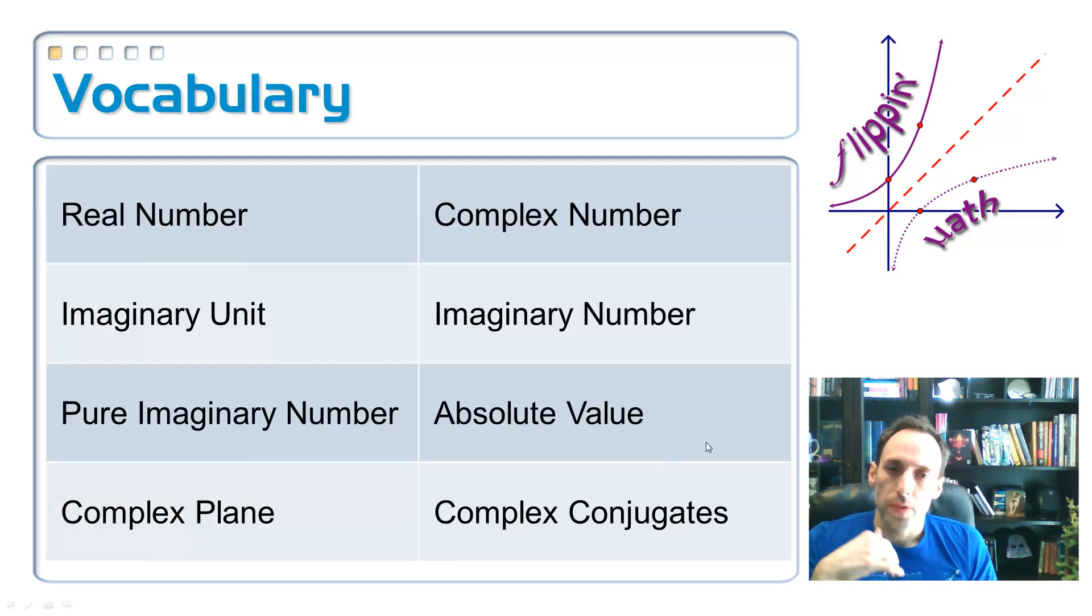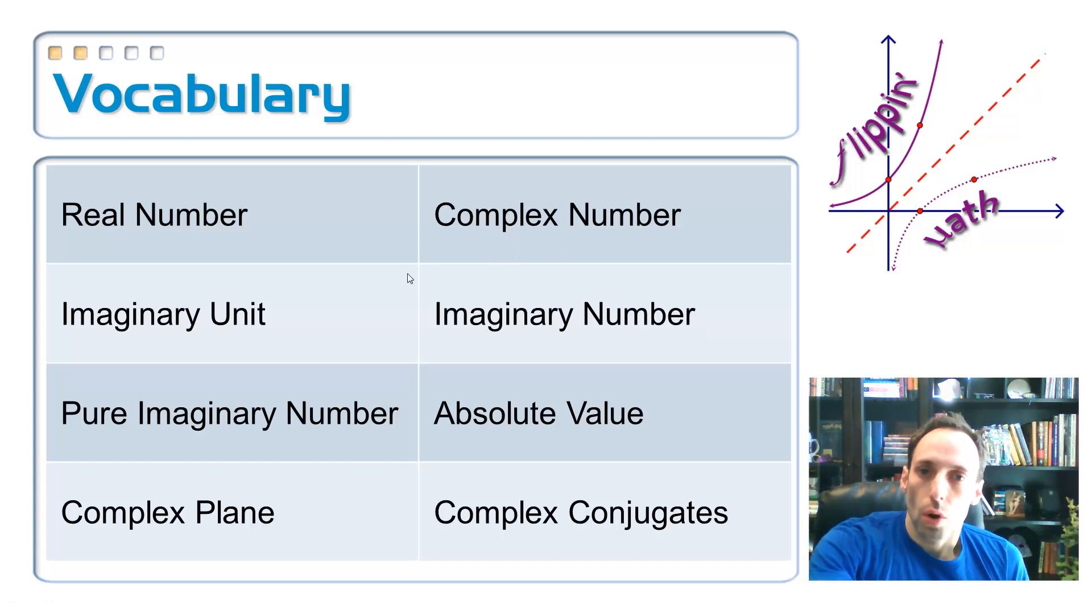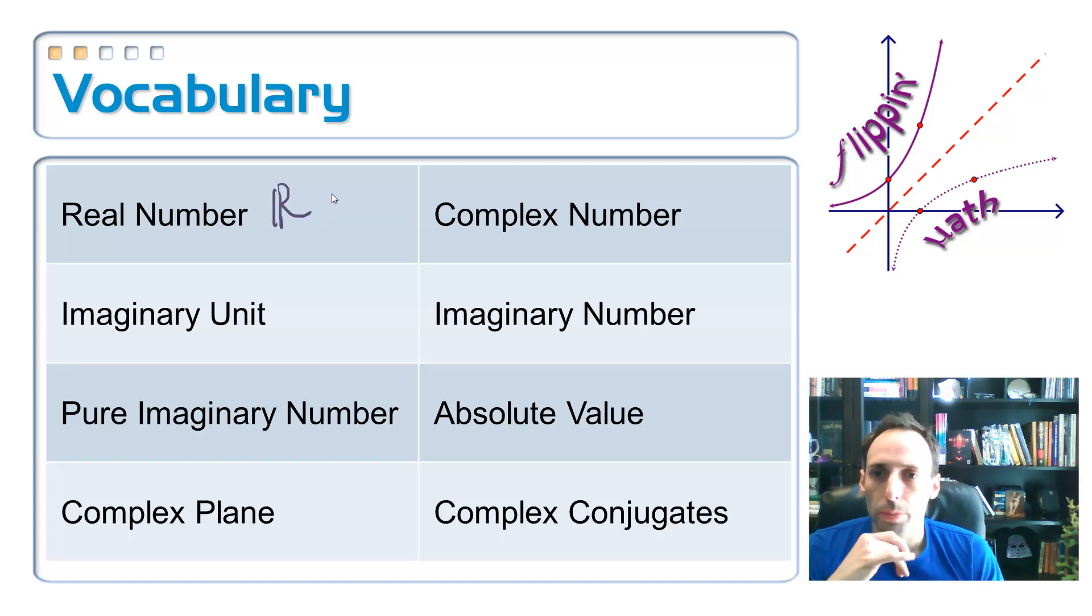So let's discuss the vocabulary for this section. So first of all, we're talking about numbers. So why not start out with the real numbers? So real numbers are all the numbers that we've talked about so far. And they come in two kinds. We have the rational ones where you can write them as a fraction, and you have the irrational ones where you can't. So you might have something like 7 halves. And over here, you might have the square root of 2.